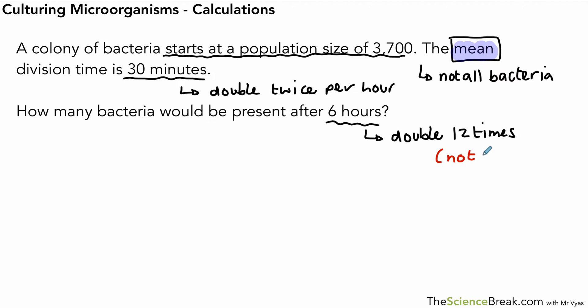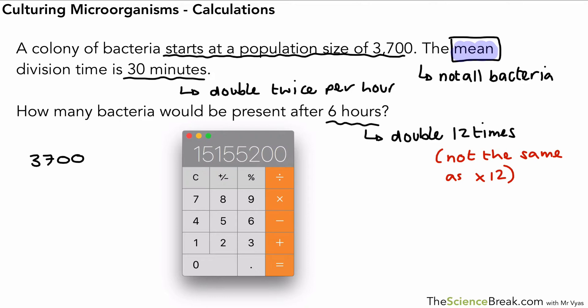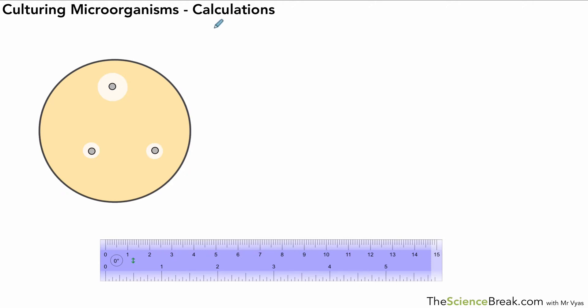Remember, doubling 12 times is not the same as just doing times 12. You wouldn't take 3,700 and just do times 12—that wouldn't give you the right answer. We have to double 3,700 12 times. You could do 3,700 times 2 times 2 times 2, but there's a quicker way: press times 2 and press the equal sign 12 times. We double 3,700 12 times and end up with 15,155,200. Because it's quite a big number, we could show this in standard form, but we'll do that in a separate video.